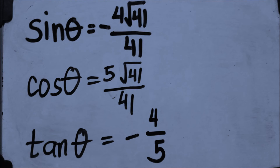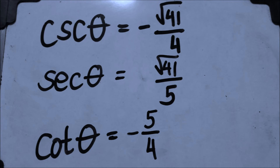Sine theta equals negative 4 square root of 41 over 41. Why negative? According to our first lesson, in quadrant 4, only cosine and secant have positive signs. Cosine theta equals 5 square root of 41 over 41. Tangent theta equals negative 4 over 5. Cosecant theta equals negative square root of 41 over 4. Secant theta equals square root of 41 over 5. And last, cotangent theta equals negative 5 over 4.